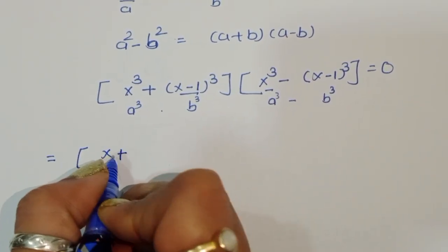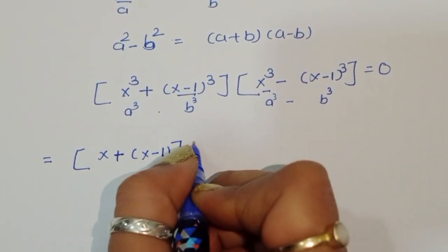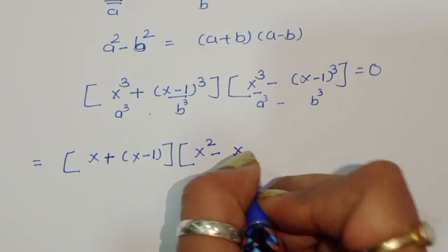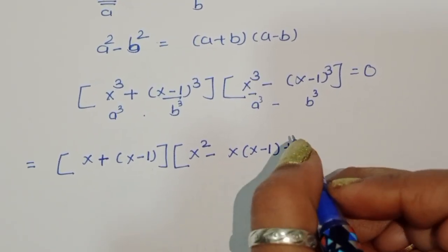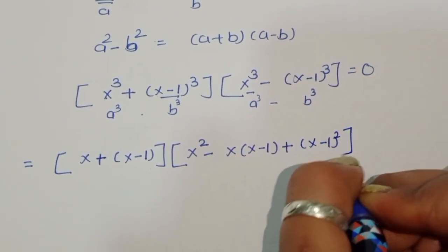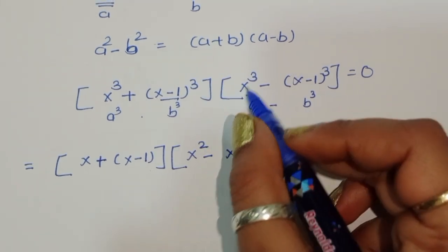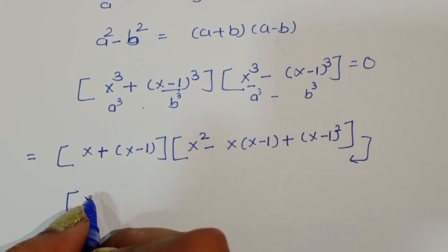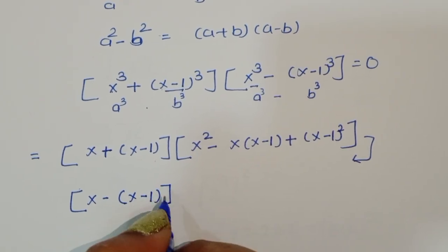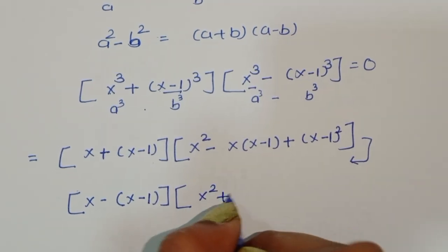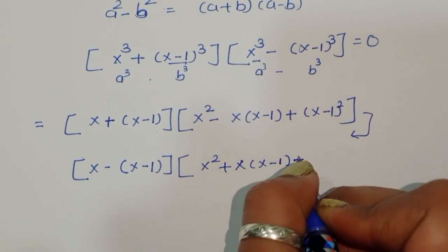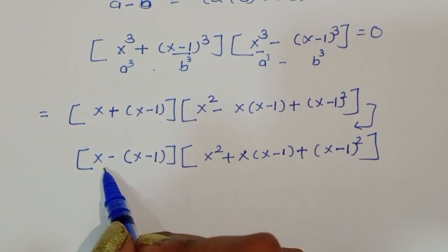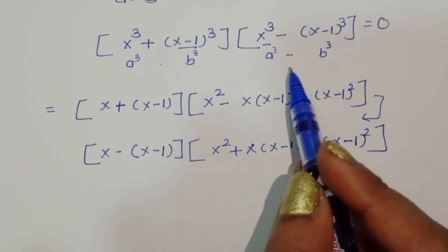For a³ plus b³, we write (a plus b)(a² minus ab plus b²), which gives (x + (x-1))(x² - x(x-1) + (x-1)²). For a³ minus b³, we use (a minus b)(a² plus ab plus b²), giving (x - (x-1))(x² + x(x-1) + (x-1)²), equal to zero.